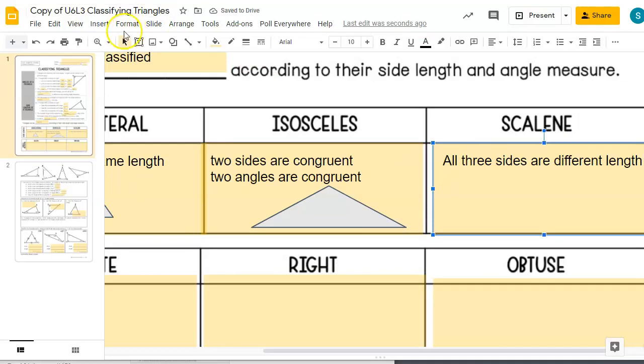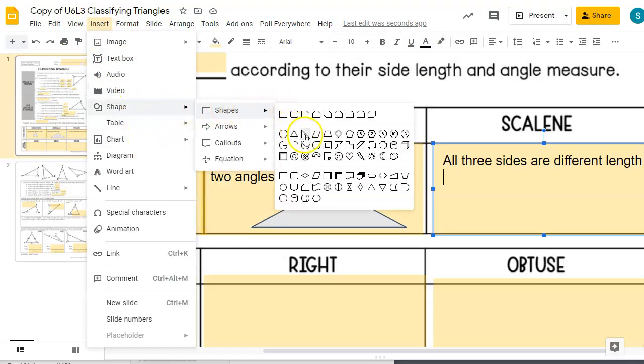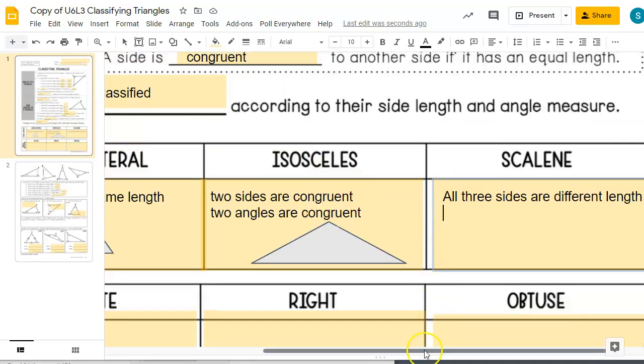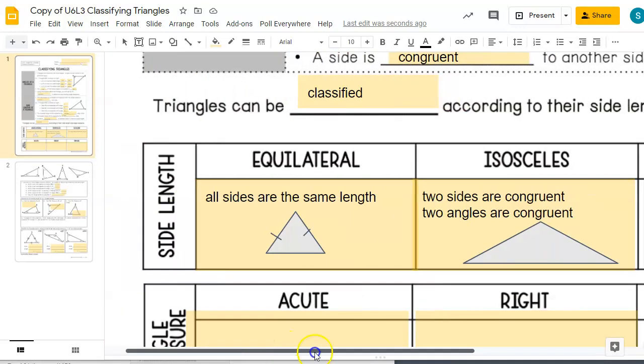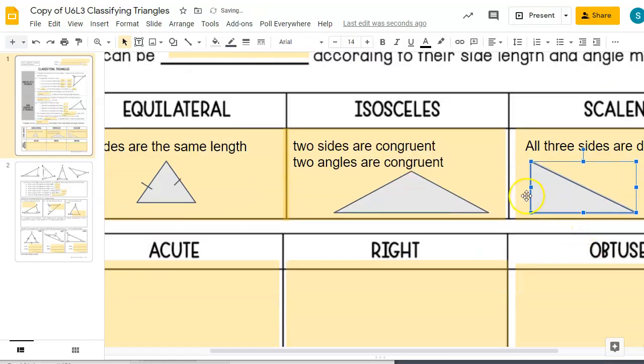Again, we're going to insert a triangle. And then we're going to make this bottom side a different size than that side there. So now, all three sides are different lengths. So this is the short side, the middle side, and the long side. No sides are congruent.